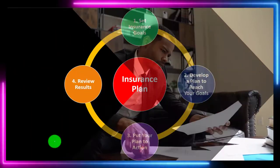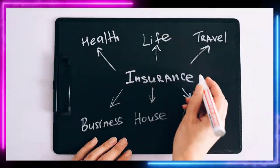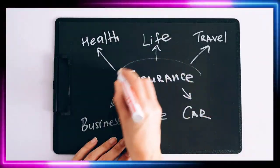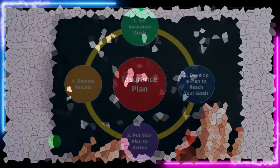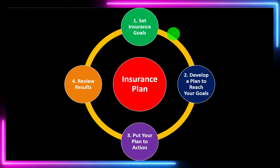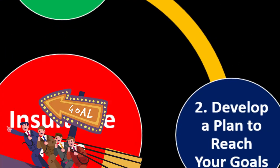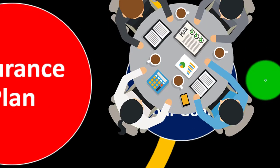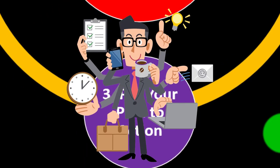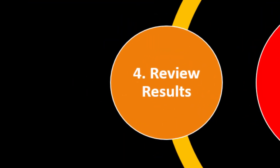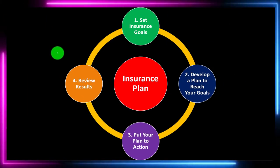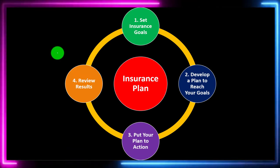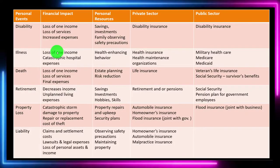The long-term decisions, such as with insurance planning, are those where we're going to use the adage of measure twice, cut once — having a more formal process in place. That might look something like this: we're going to set the goals, develop a plan to reach the goals, put the plan in action, and then review the results on a periodic basis in order to check where we stand.